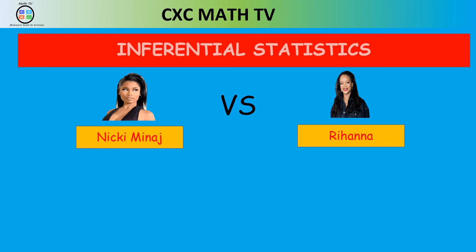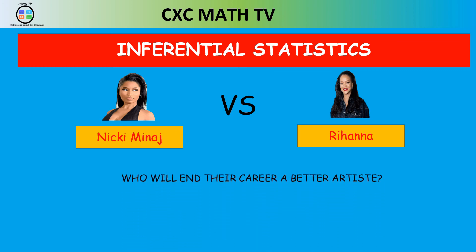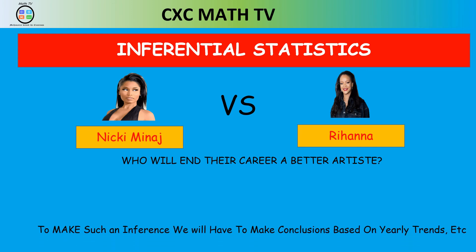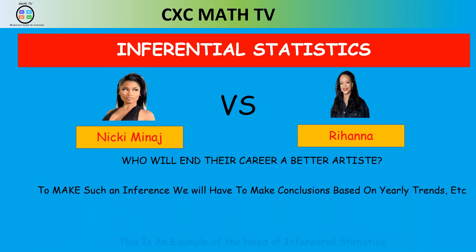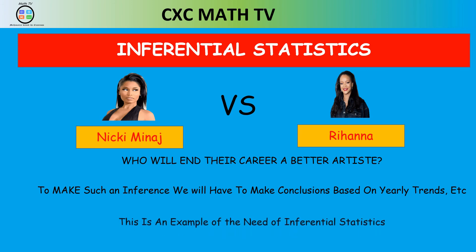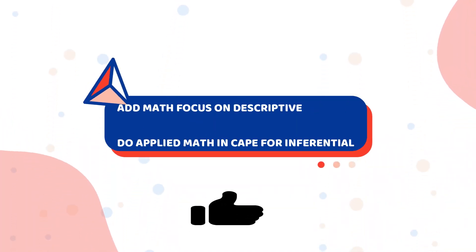Now let's say we asked who will end their career a better artist between Nicki and Rihanna. To make such an inference, we would have to make a conclusion based on some yearly trend — going back through the information obtained from our sample and then making a conclusion. This is an example of inferential statistics.